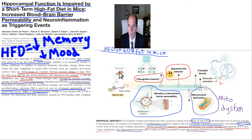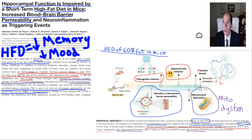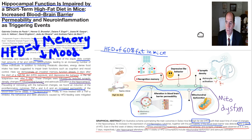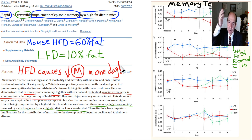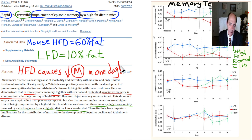Multiple papers show that feeding a high-fat diet to a mouse makes it cognitively impaired — it can't perform simple tasks well. Across three papers, the consistent finding is: high-fat diet causes cognitive impairment.